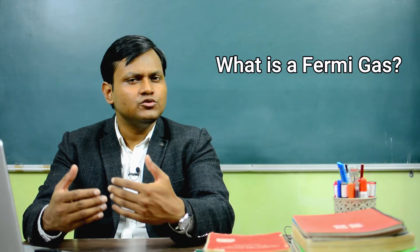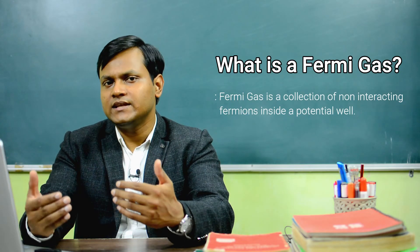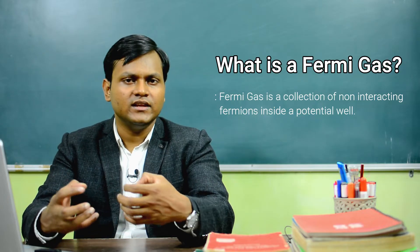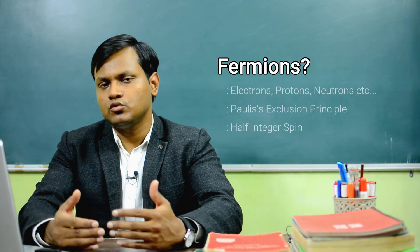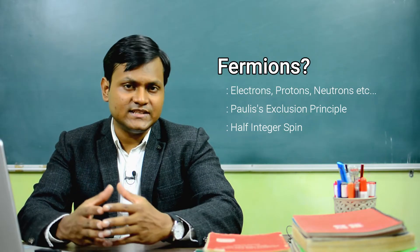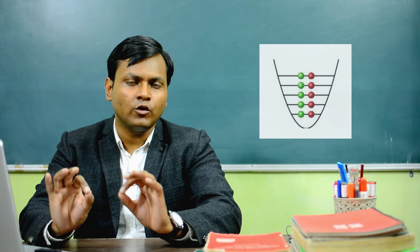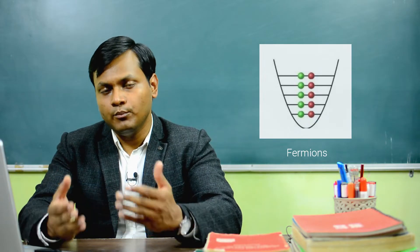To understand it better, let's look at what a Fermi gas is. Simply put, a Fermi gas is a collection of non-interacting fermion particles which are stuck in a potential. Fermions are quantum particles like electrons, protons, and neutrons which follow the Pauli exclusion principle, which states that no more than two fermion particles can occupy the same energy level, and even then they must have opposite spin.